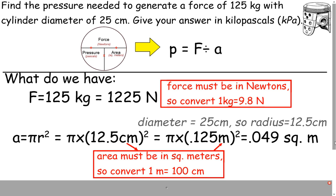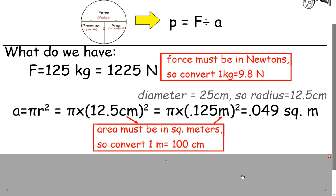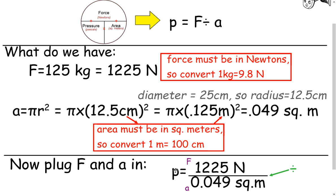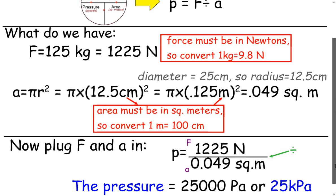Now we have our force in newtons and our area in square meters, and we are ready to find our pressure. We look at our formula and it says to divide — pressure equals force divided by area, and this bar means to divide. We end up with 25,000 pascals. But the problem asks for kilopascals, and there are 1,000 pascals in a kilopascal, so we divide by 1,000 and end up with 25 kilopascals.